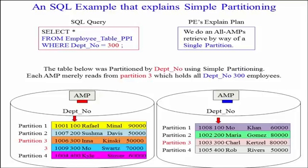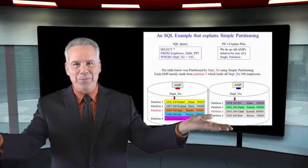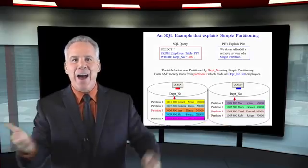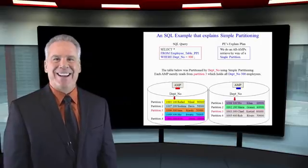Now the parsing engine says that table has been partitioned by Dept_No. So AMPs, you'll all be involved. It's an all-AMP retrieve. But just read your partition three. Don't do a full table scan. That's how partitioning is designed to work.